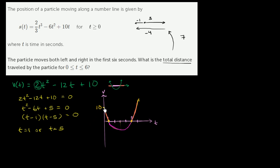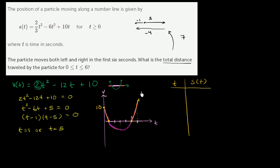Now let's think about the particle's position at each key time — t = 0, t = 1, t = 5, and t = 6 — and figure out the distance traveled between those times. We'll set up a table with time and position.